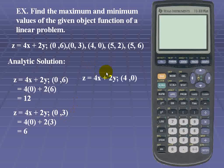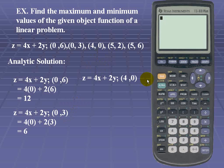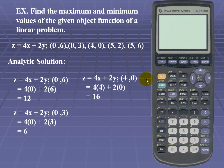We substitute our next ordered pair (4,0). Simplifies to 16. Our next ordered pair (5,2). x is 5, y is 2. Solution is 24.